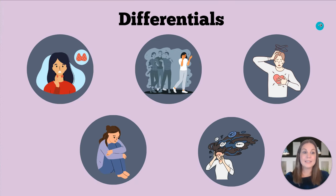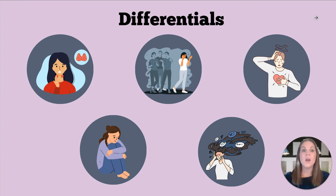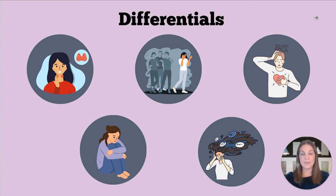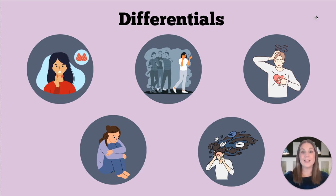So let's say our GAD-2 and GAD-7 indicated generalized anxiety. Although these scales were designated for generalized anxiety disorder, they also can detect other forms of anxiety. We are certainly going to be thinking about panic disorder if our patient tells us about times of intense worry with a very fast onset.